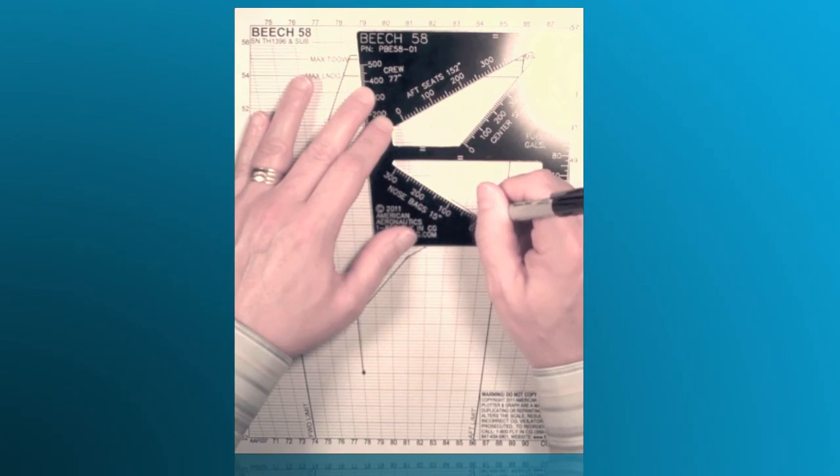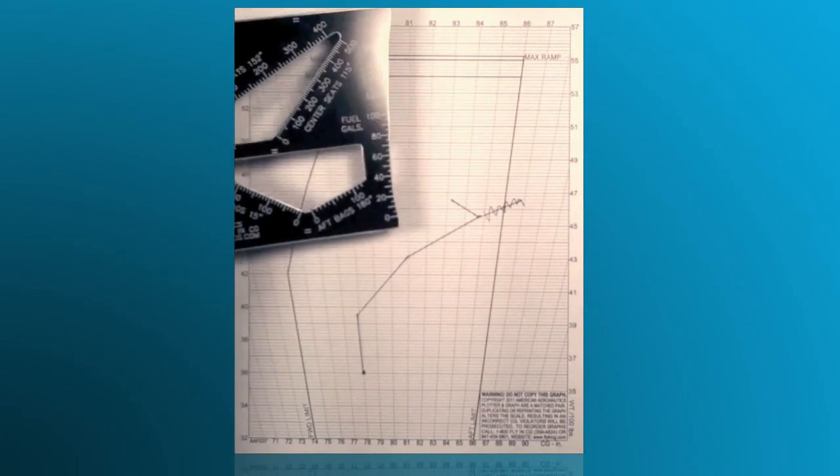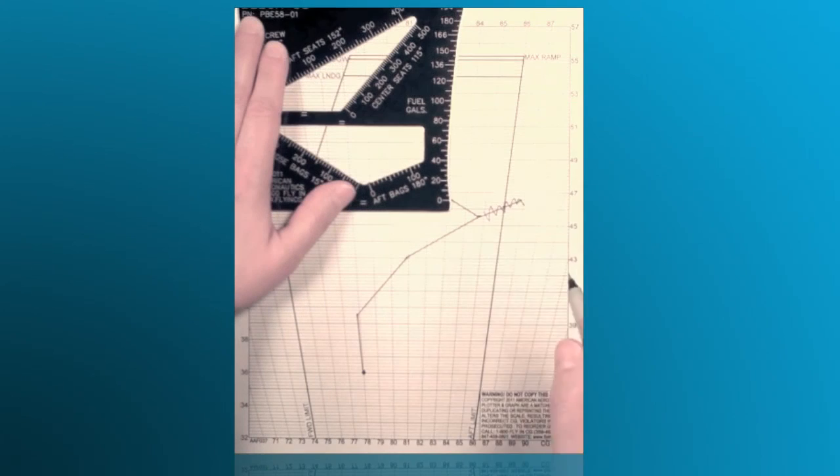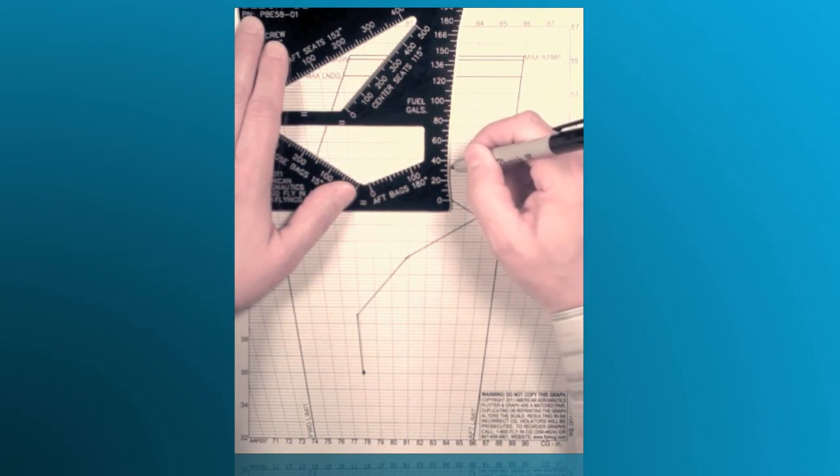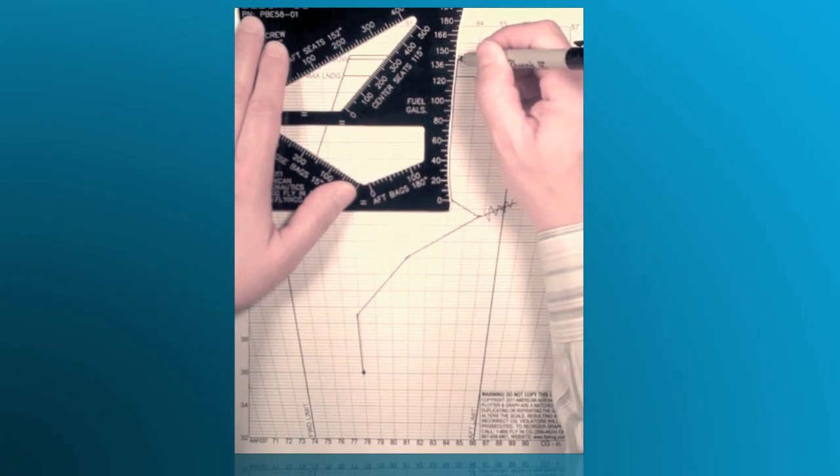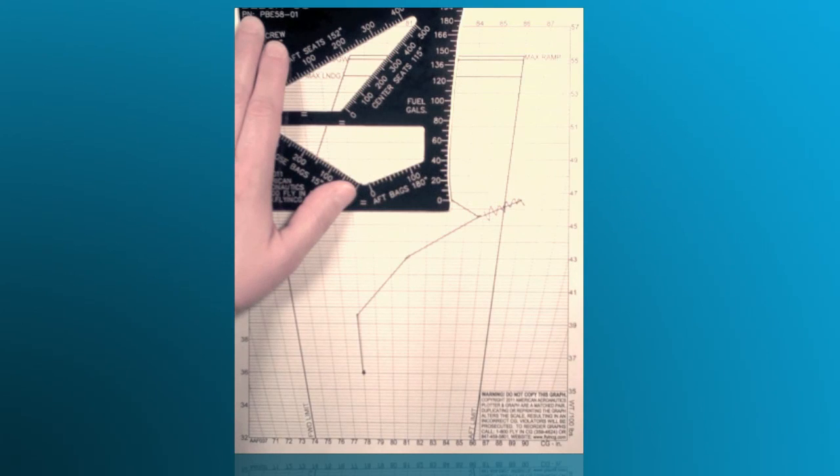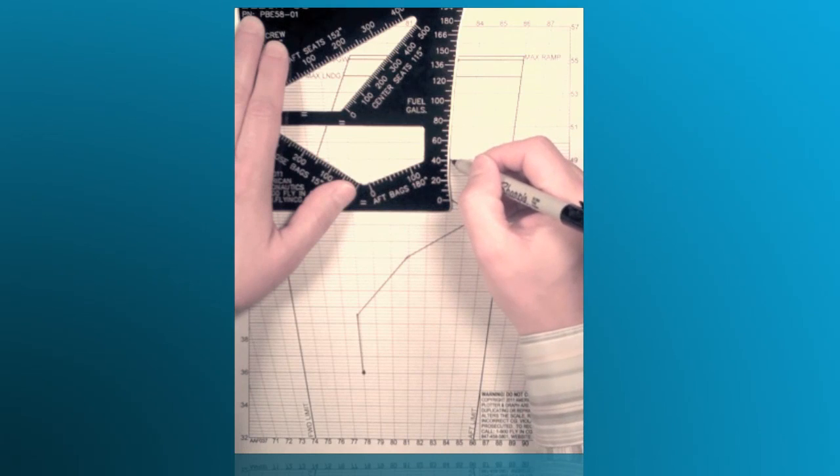Now, the maximum takeoff gross weight in this aircraft is 5,500 pounds. We're simply going to draw fuel to our maximum takeoff weight, make a mark, and let's make a mark for our landing fuel. We'll make that 40 gallons so we can see at landing what our weight and center of gravity is going to be.